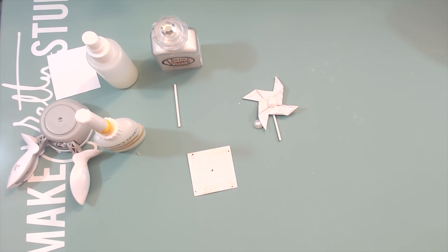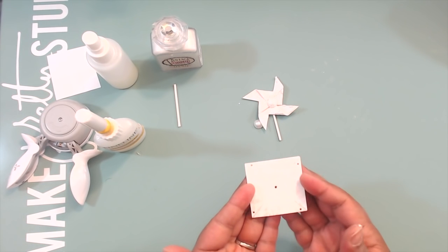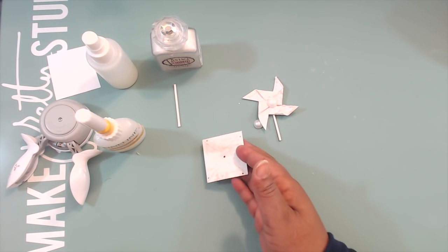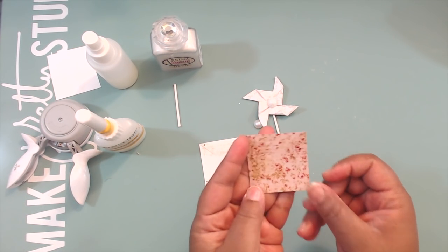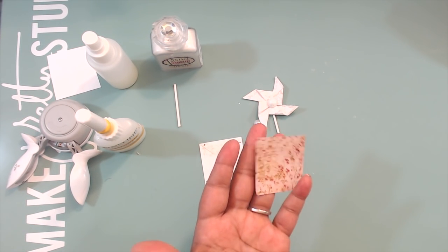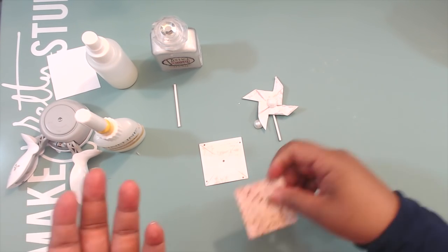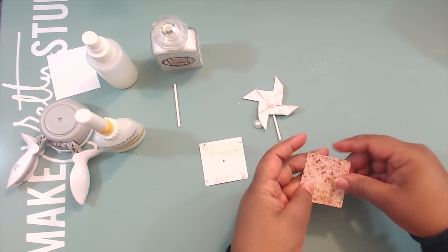Now I made a mass production of these pinwheels and I used my Silhouette Cameo pinwheel file and cut it out at two by two. But you can do these by hand if you don't have that file or any cutting machine. You just take a square the dimension that you want it to be at.